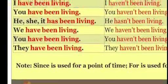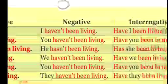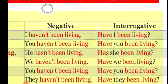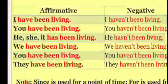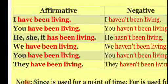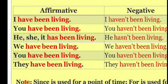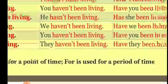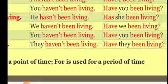For affirmative sentences, a few examples: I have been living. You have been living. He/she/it has been living. We have been living. You have been living. They have been living. Note: 'since' is used for a point of time and 'for' is used for a period of time.